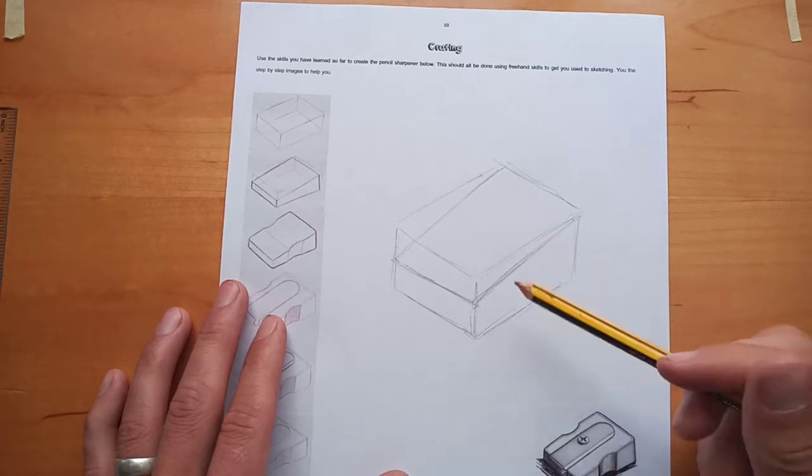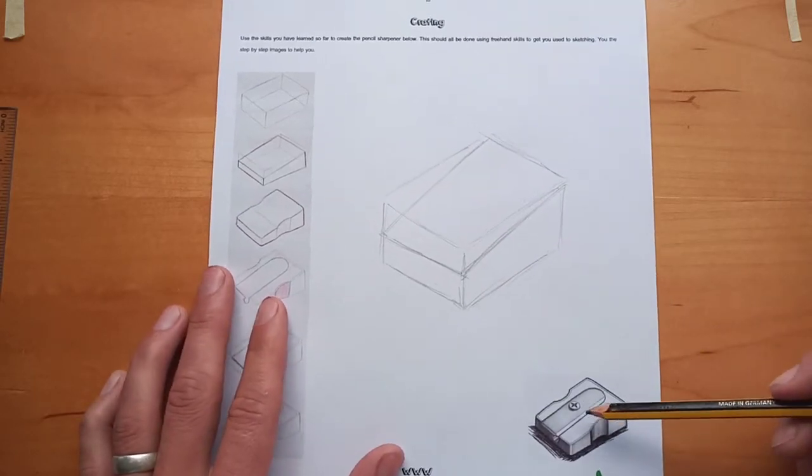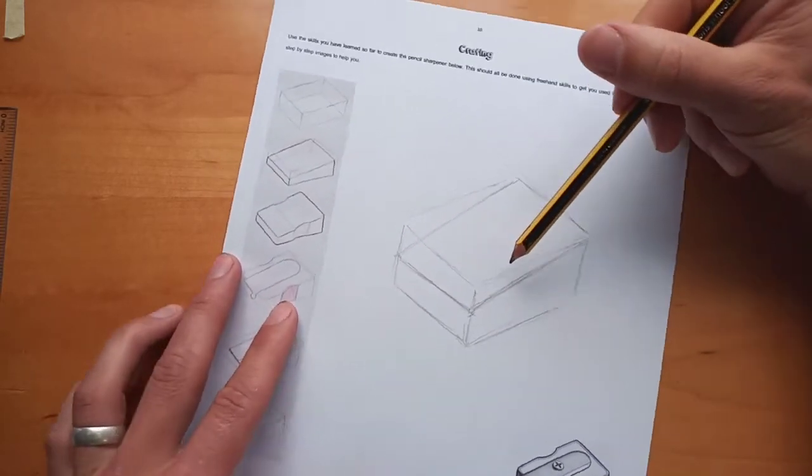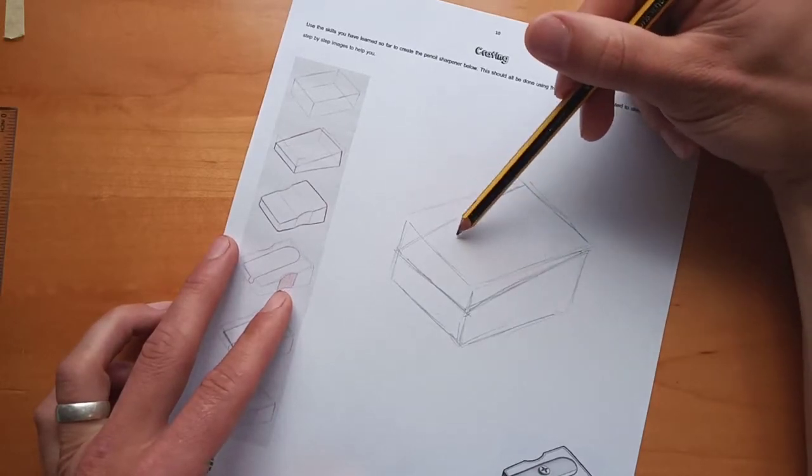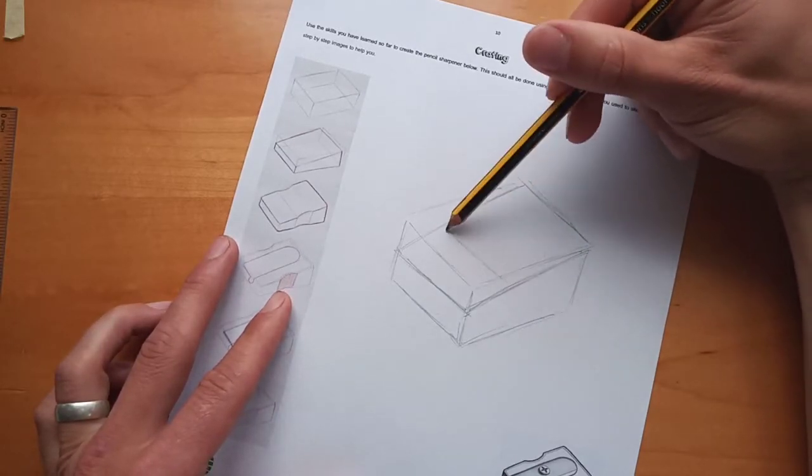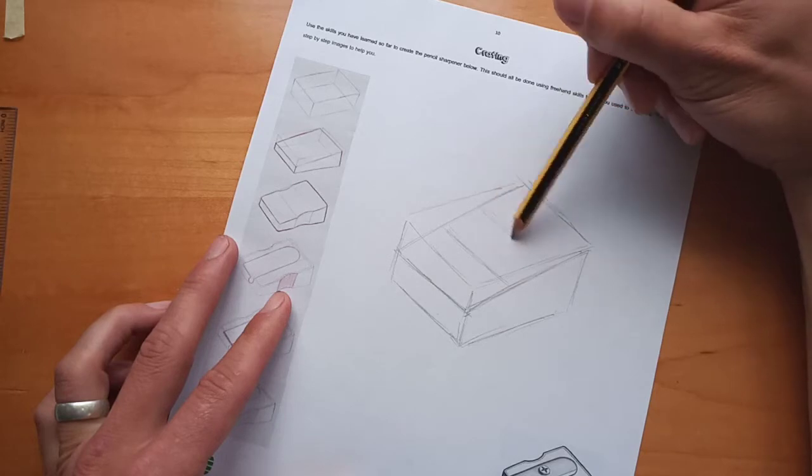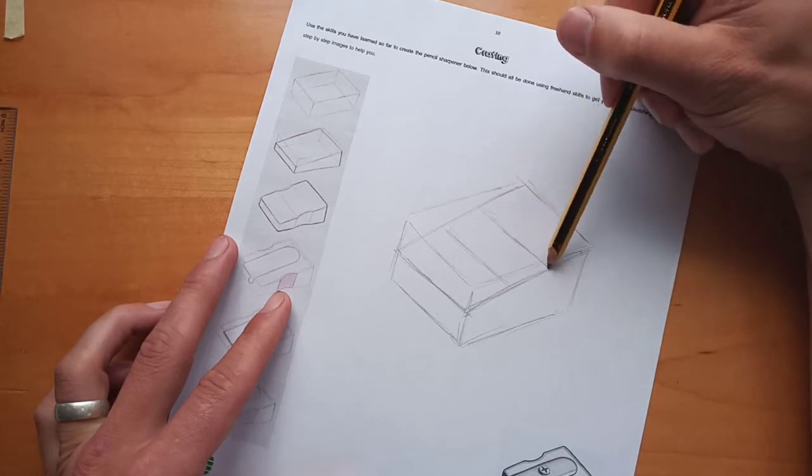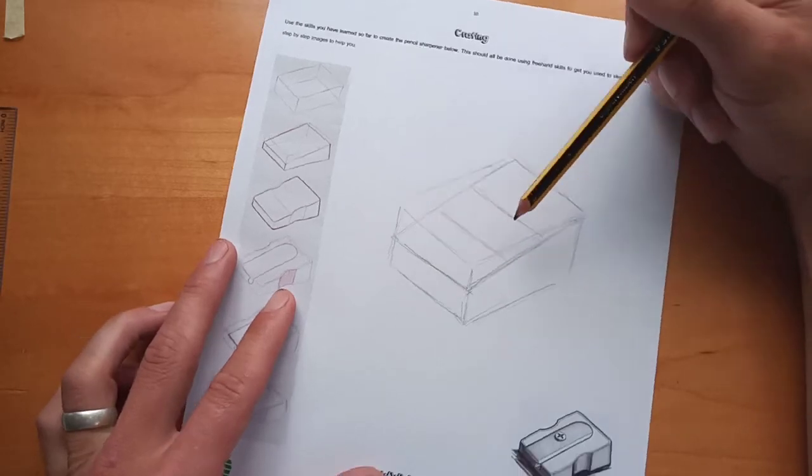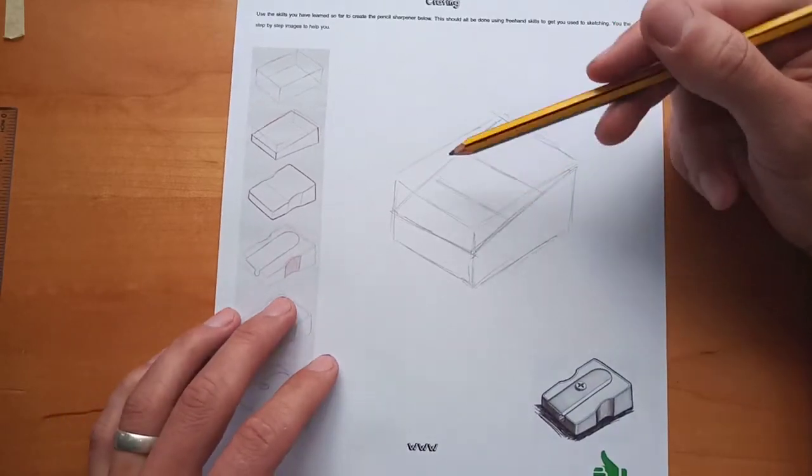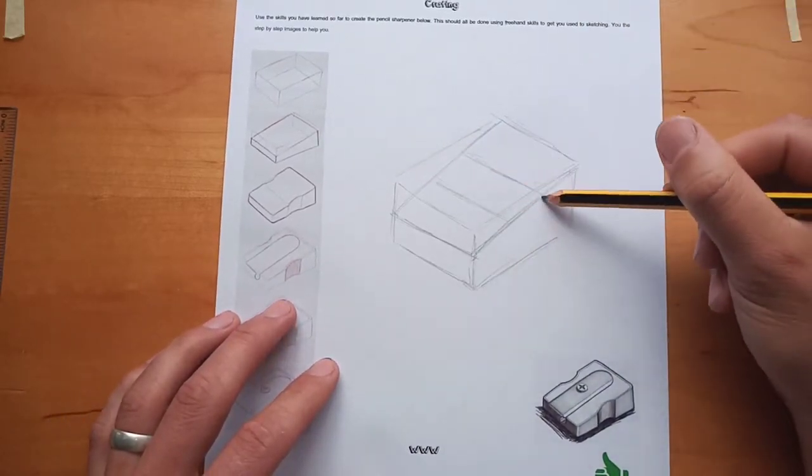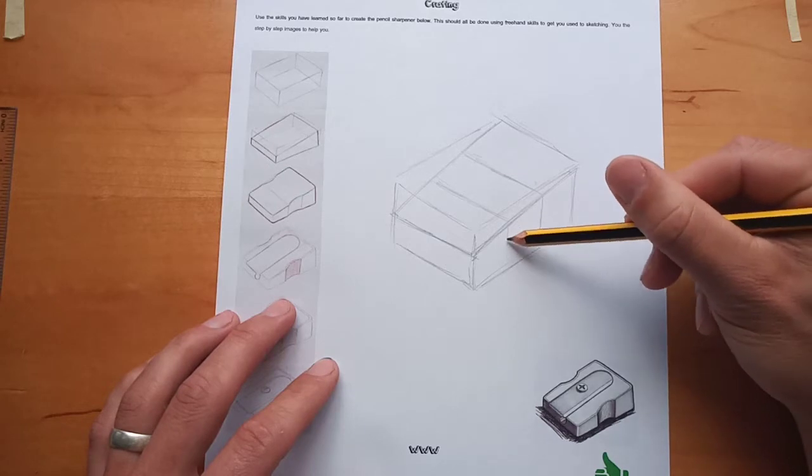Next thing to do is we've got this section at the front here where we've got the inset. So again, I'm going to look at this overall shape for length and I'm going to roughly divide it up. So I'm going to come to about there, a third of the way down. Just bring across a couple of lines. From there, bring those lines down the side as verticals.